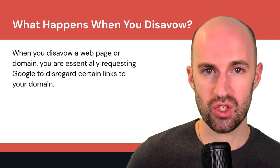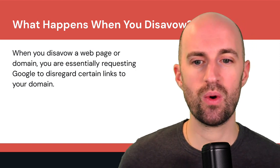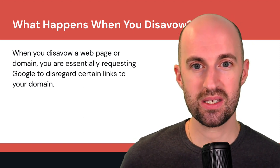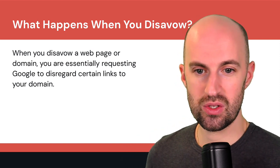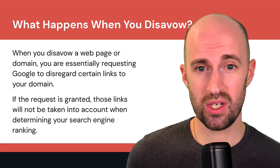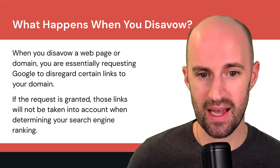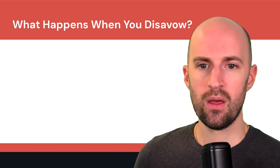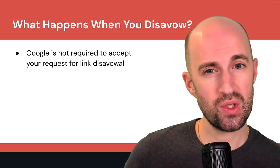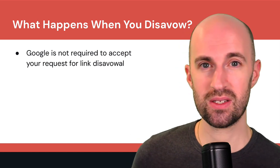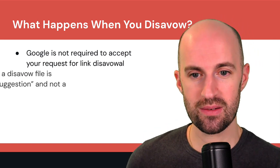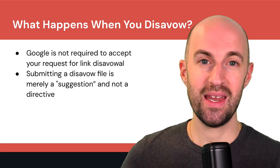When you disavow a web page or an entire domain, you're essentially requesting Google to disregard certain links to your domain — saying, look, ignore these, they're spammy and harmful, I don't want to be associated with them. If the request is granted — and it's up to Google to determine that — those links will not be taken into account when determining your search engine rankings. Google is not required to accept your request. It's a suggestion, not a directive.